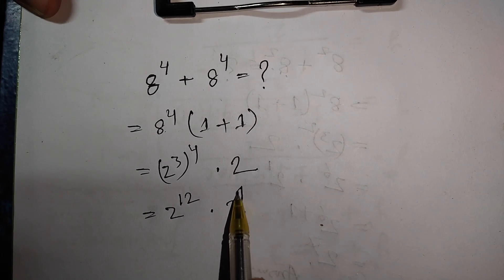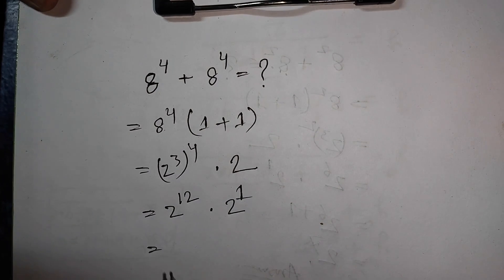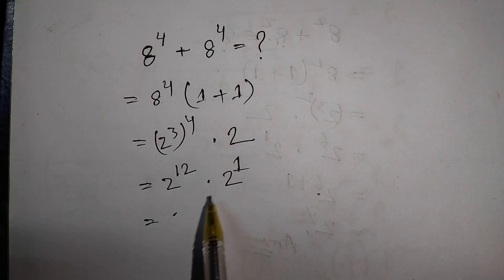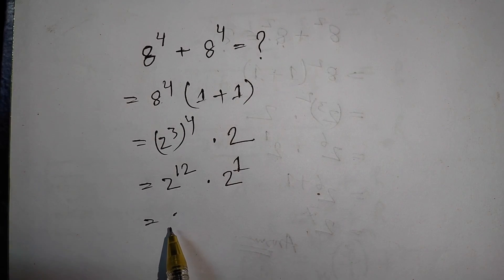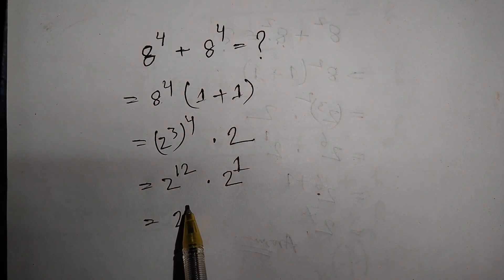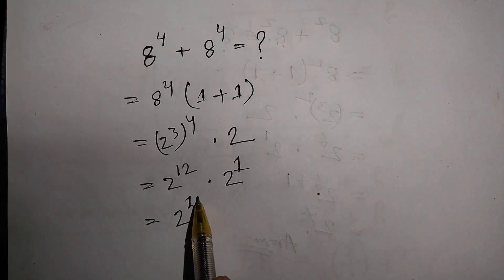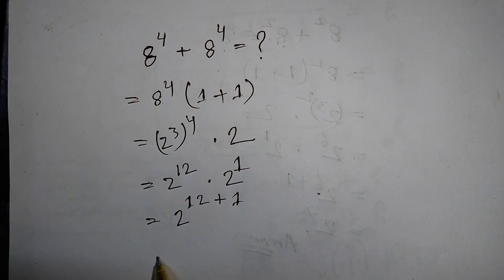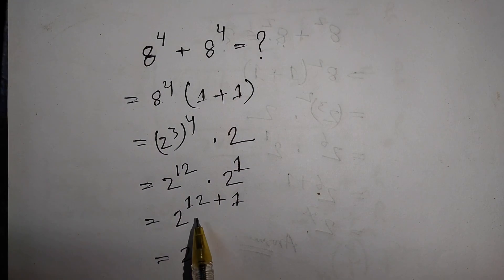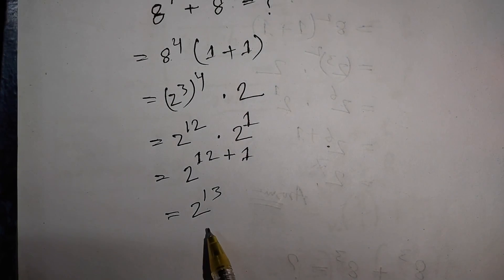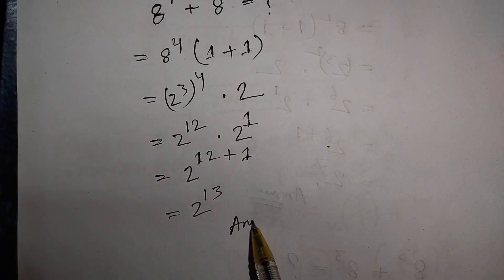We have the same base of 2, so we add the powers: 2 to the power 12 plus 1, which equals 2 to the power 13. So 2 to the power 13 is the correct answer.